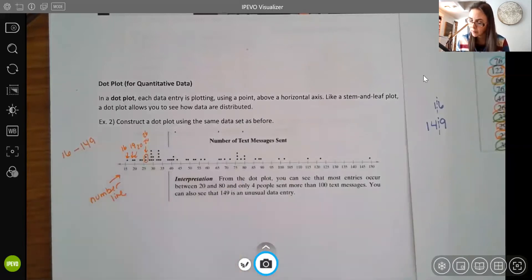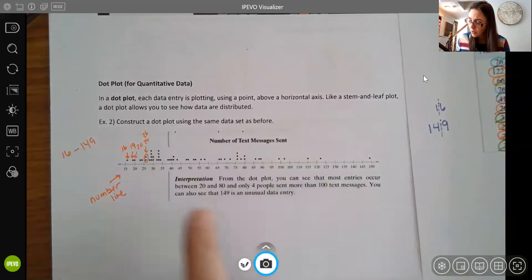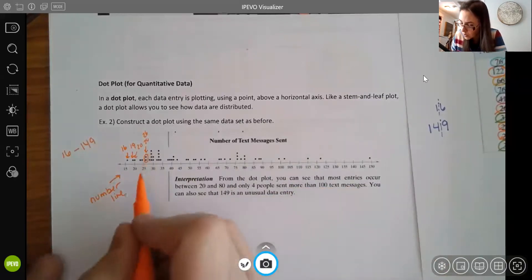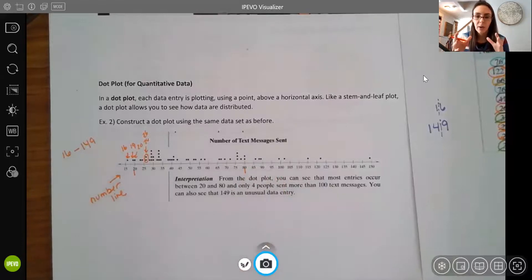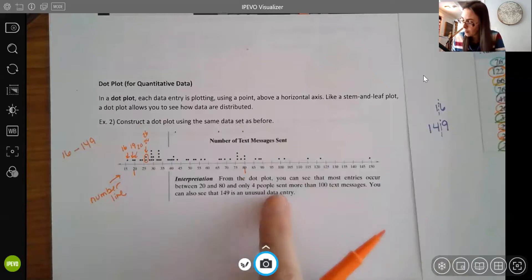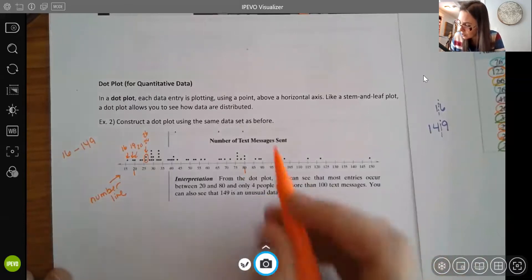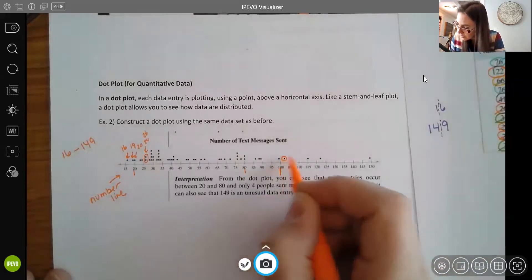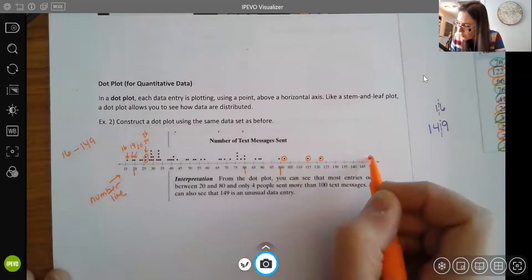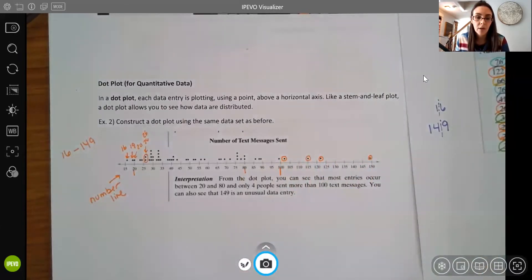All right. And as I said here, your book is saying the same thing. You can see that most entries occur between 20 and 80. So here's 20. Here's 80. Just looking, I can see that that's where most of the data is. That's where most of those dots are. And only four people sent more than 100 text messages. So here's your 100. You can see that there's only one, two, three, four people or four data points that are above 100.